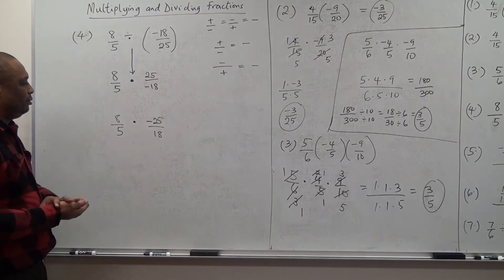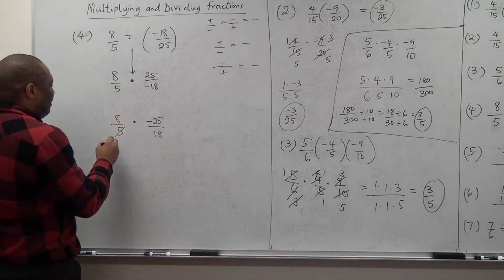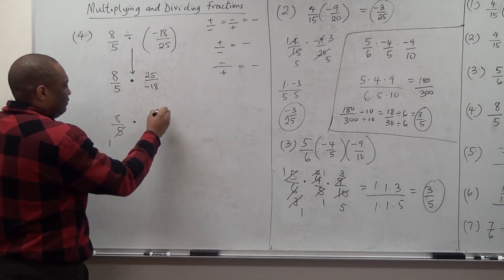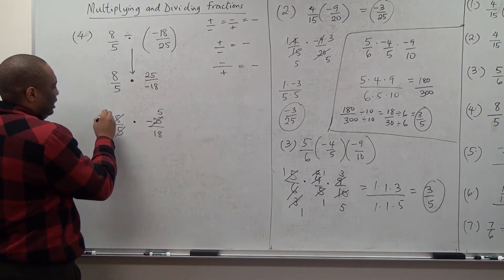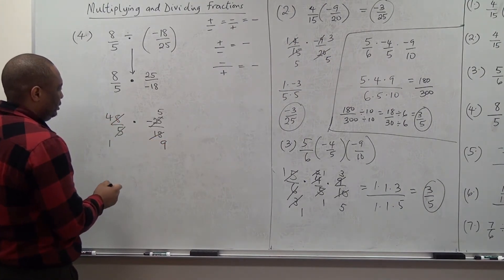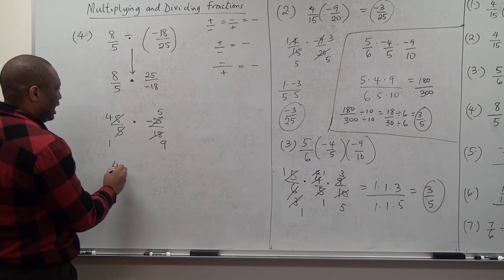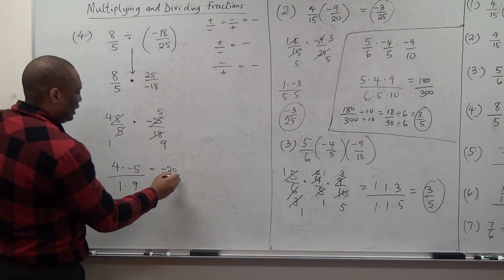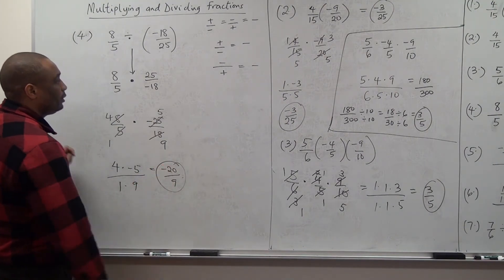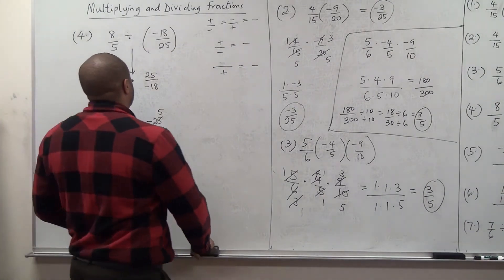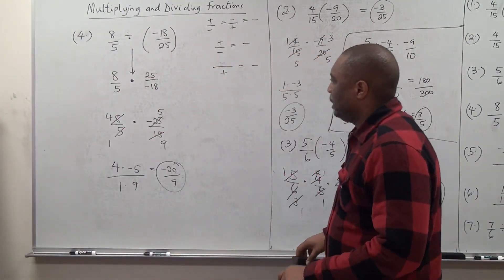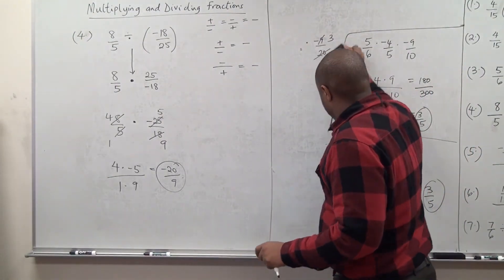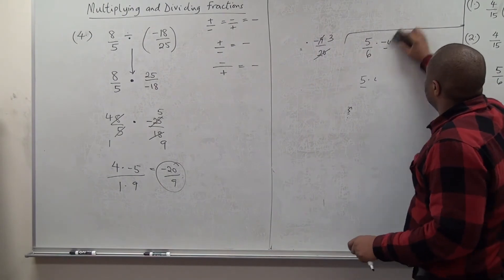Now simplify and multiply: 5 divides 5 is 1, 5 divides negative 25 is negative 5; 2 divides 8 gives 4, 2 divides 18 gives 9. So we have 4 times negative 5 over 1 times 9, which gives negative 20 over 9. You can leave your answer as an improper fraction unless they tell you to leave it as a mixed number.